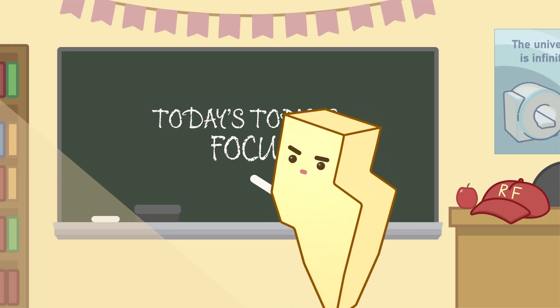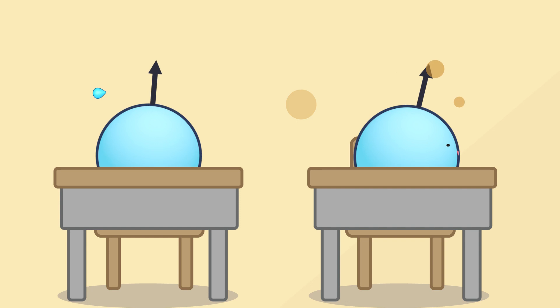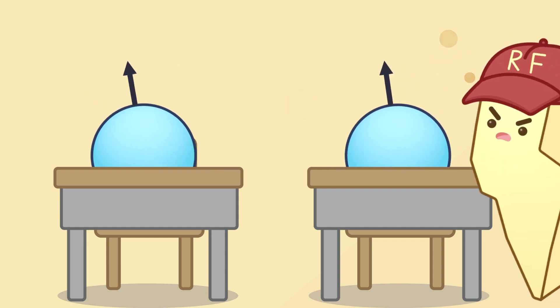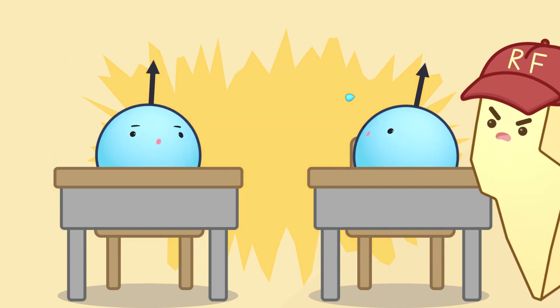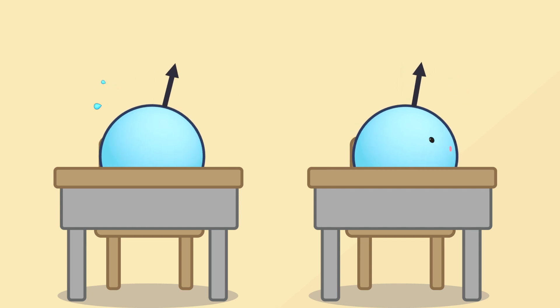As some protons lag behind their faster counterparts, we can apply a 180-degree refocusing RF pulse that instructs all of the protons to turn around and precess in the opposite direction.